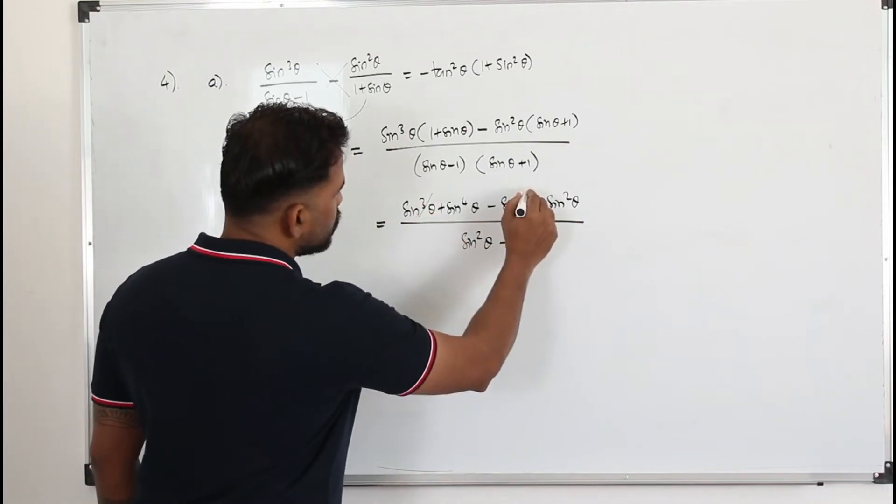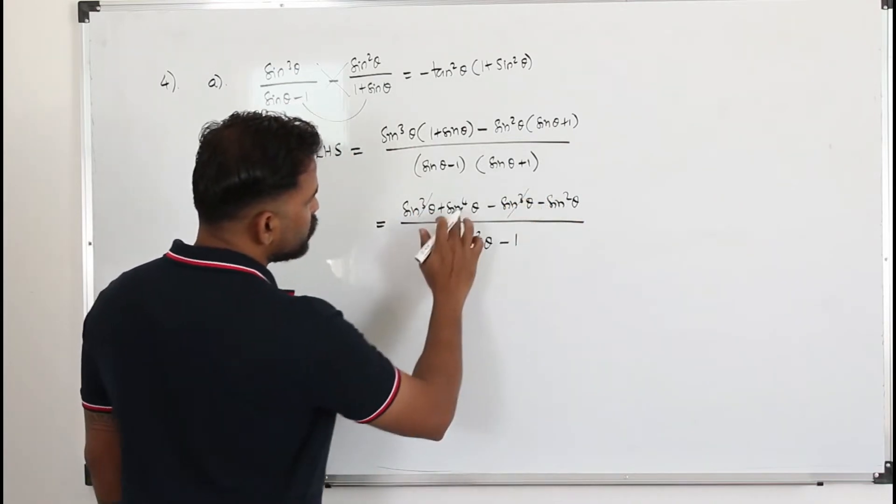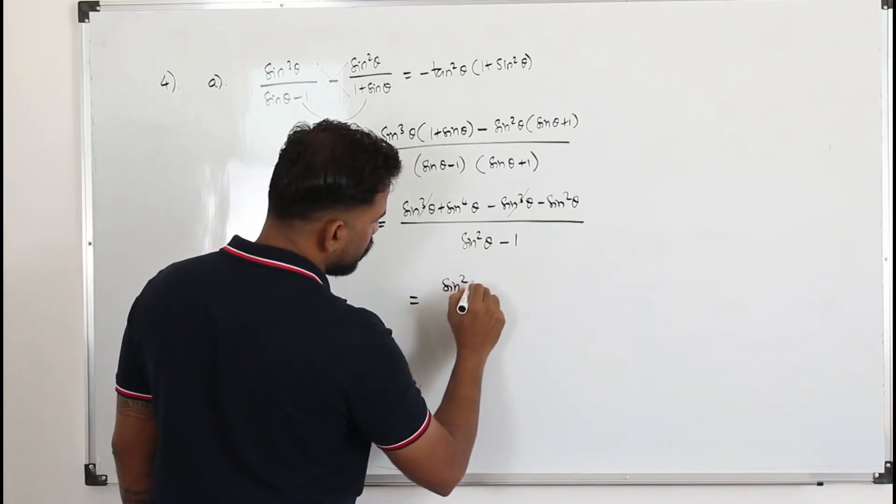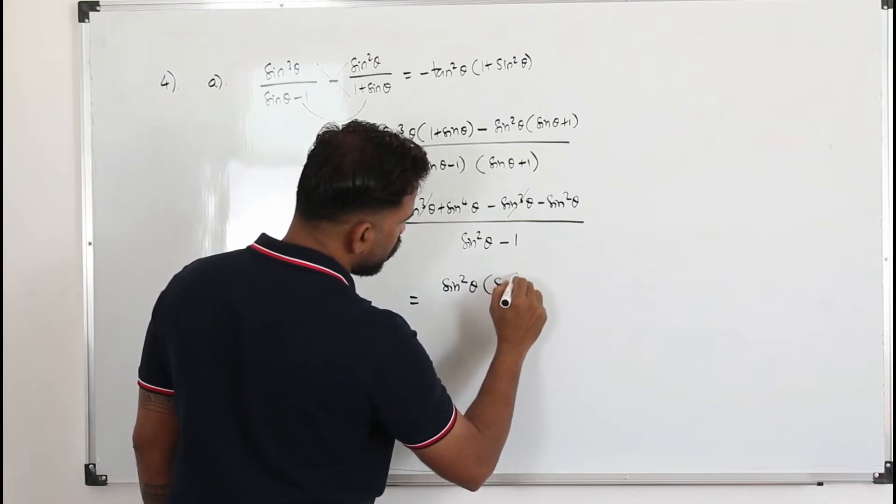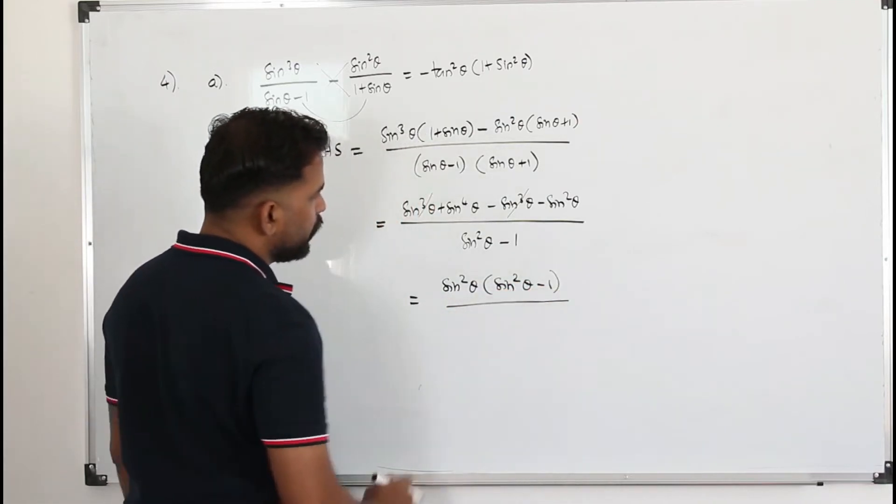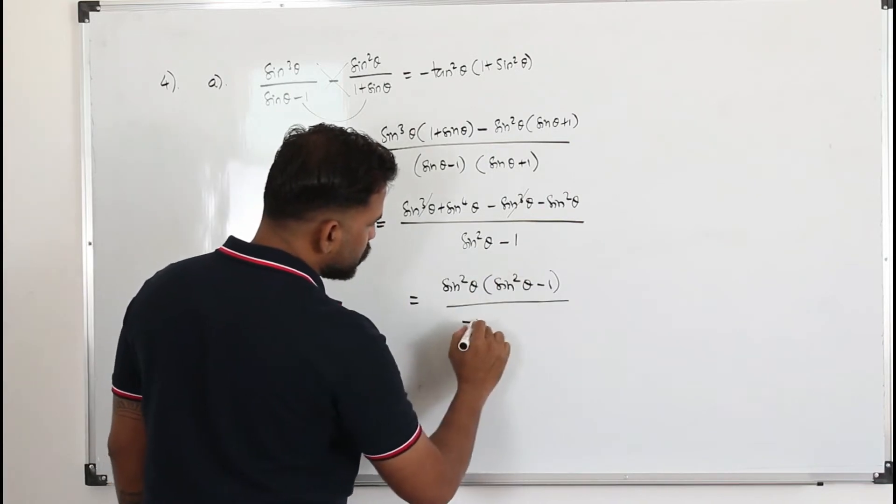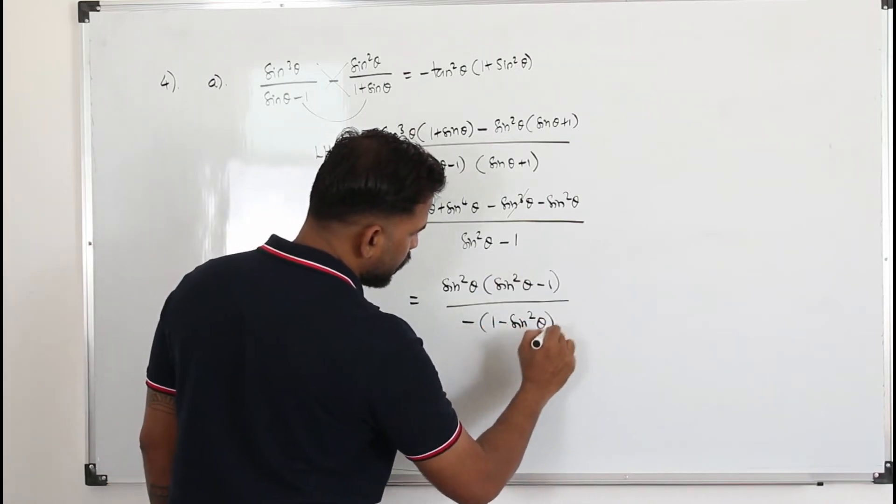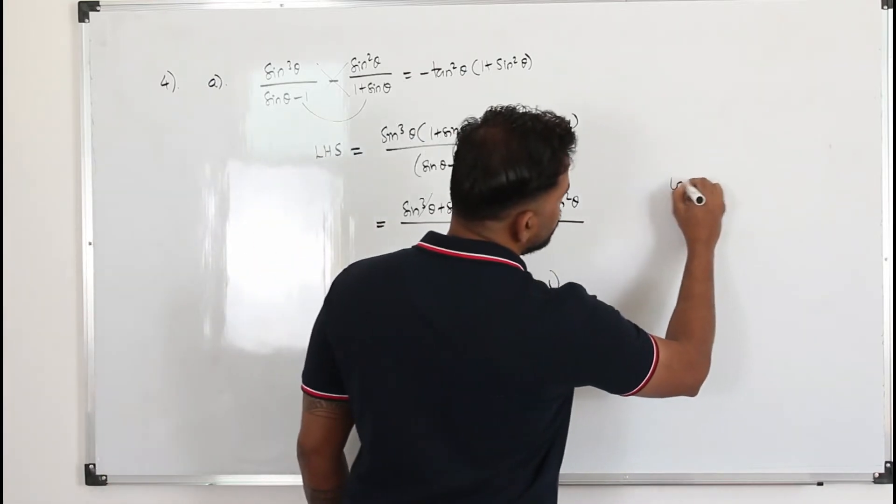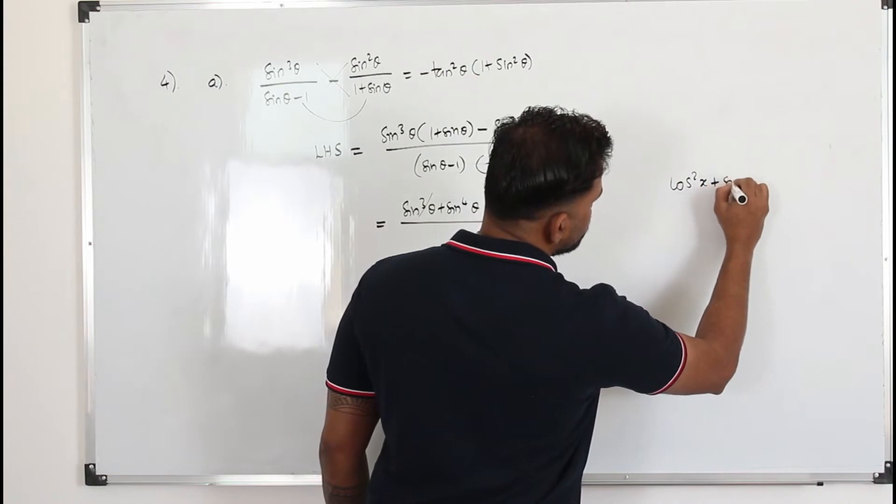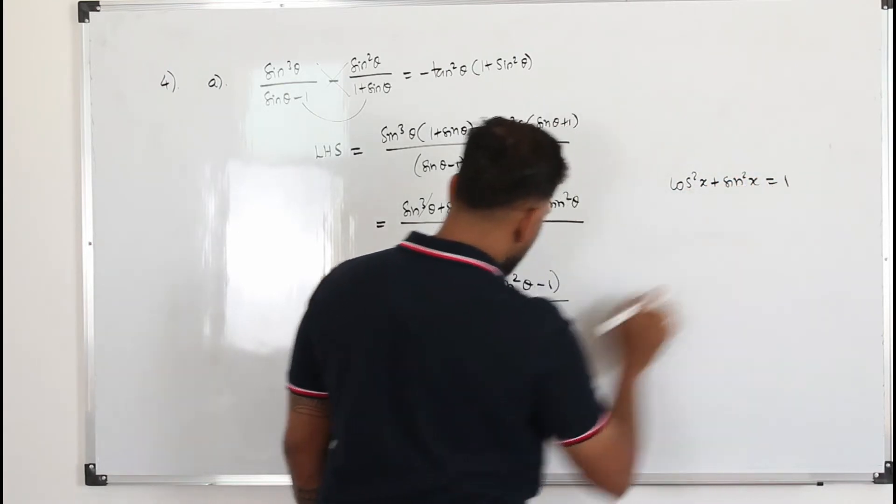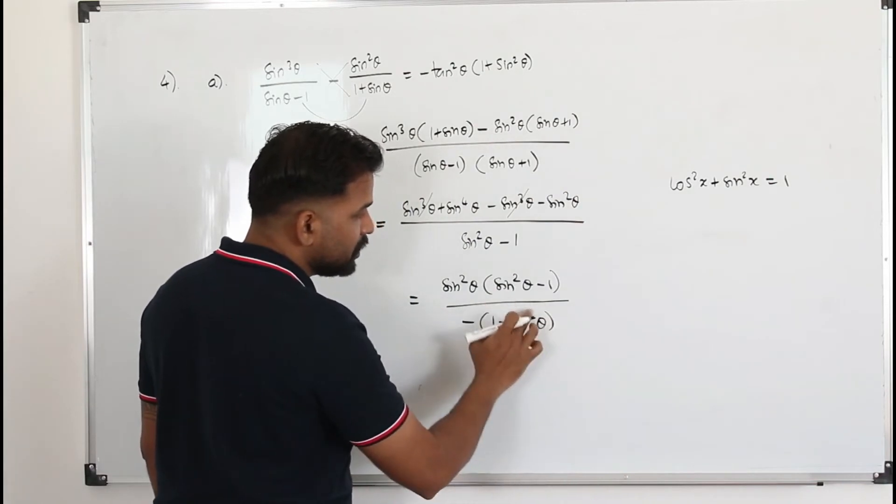Sin³θ can be cancelled. We have sin⁴θ - sin²θ. So I'm going to take sin²θ as a common factor out. You'll get sin²θ(sin²θ - 1) divided by... I'm going to take a negative sine out. So this can be written as 1 - sin²θ. The reason why I'm doing this is so that I can apply this identity. Cos²x + sin²x = 1. So cos²x is going to be 1 - sin²x. I'm going to replace this by cos²θ.